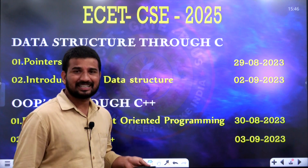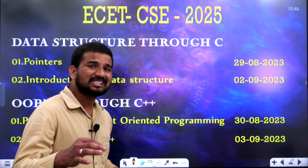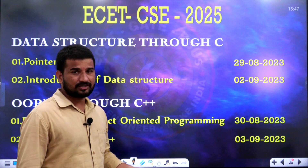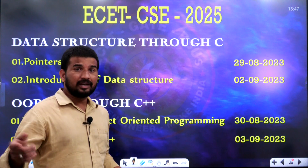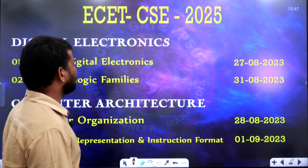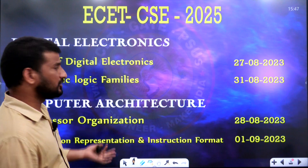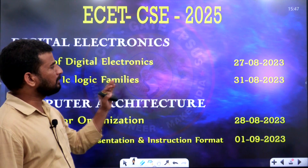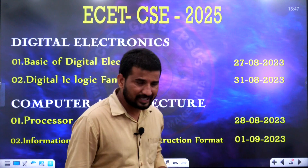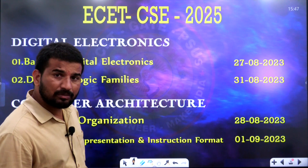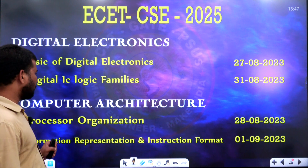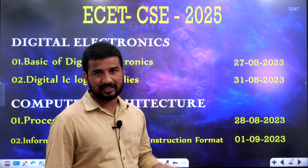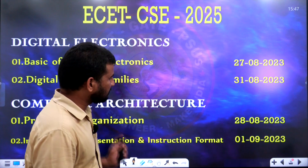This is the 4th subject. The 1st unit is now complete. We will check the 2nd unit exam. The 1st of September: Computer Architecture — Information Representation and Instructions. This is the 4th unit that is scheduled.